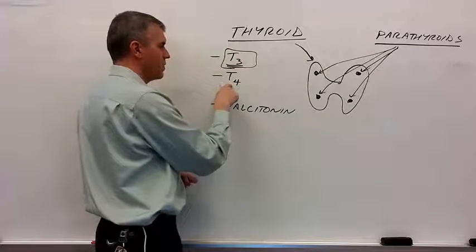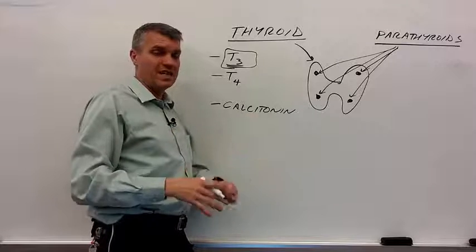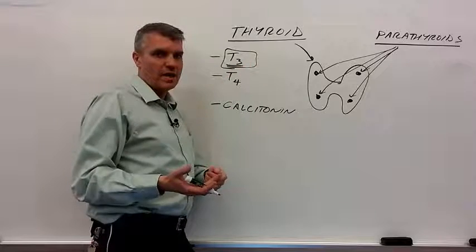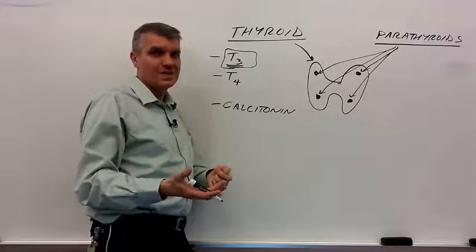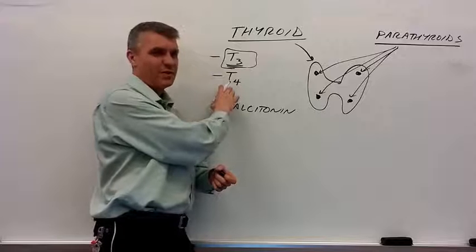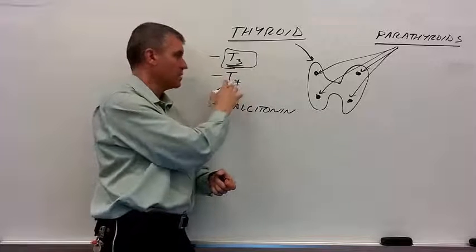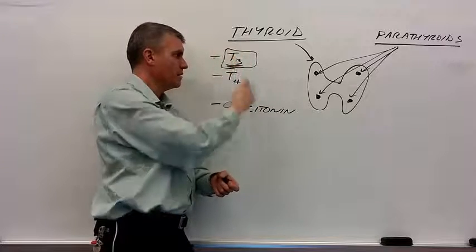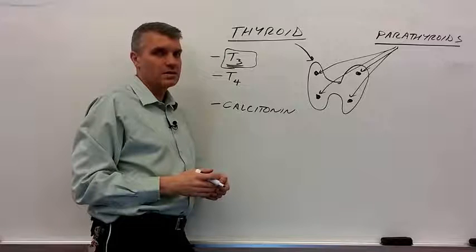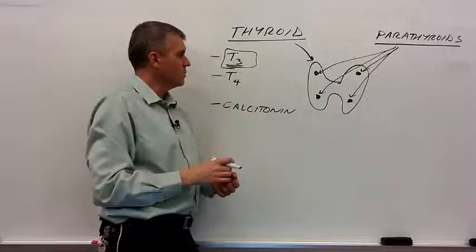T4 is the inactive version of the hormone. The effect of T3 is to increase cellular metabolism, to increase energy usage by the cells. So T3 is released in response to a decrease in metabolism or to a decrease in body temperature. T4 becomes activated usually at the target cell. The target cell can convert T4 into T3. Collectively they're called the thyroxines or just thyroxine.